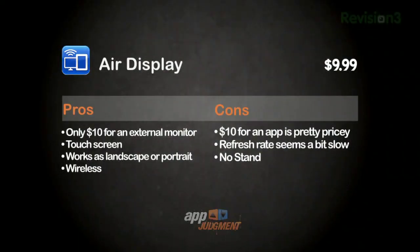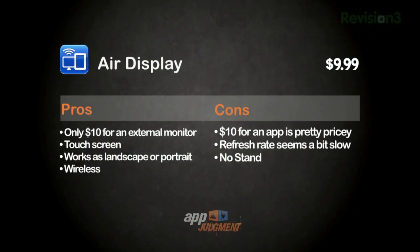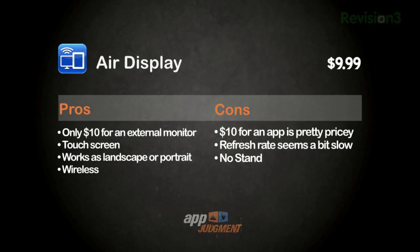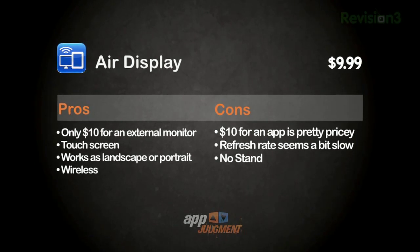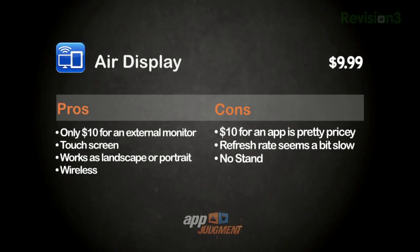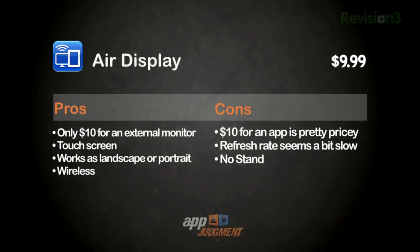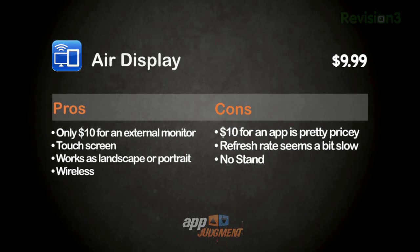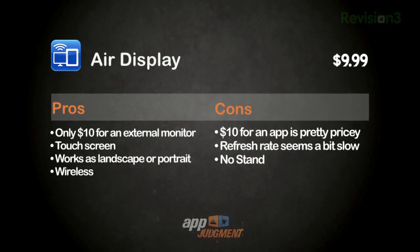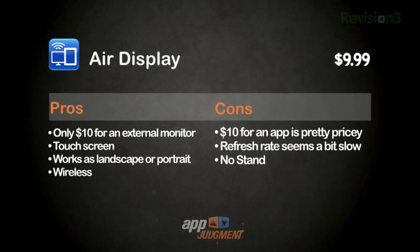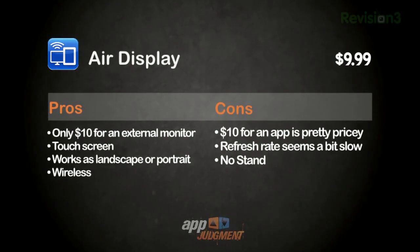Now onto the pros and cons. First, you've got an extra monitor sitting in your pocket, backpack, or briefcase — that's pretty cool. Second, you have a touchscreen display sitting in your pocket, backpack, or briefcase. Third, the display works in landscape or portrait mode and switches on the fly. And it only costs $10 to turn your iOS device into an external display.